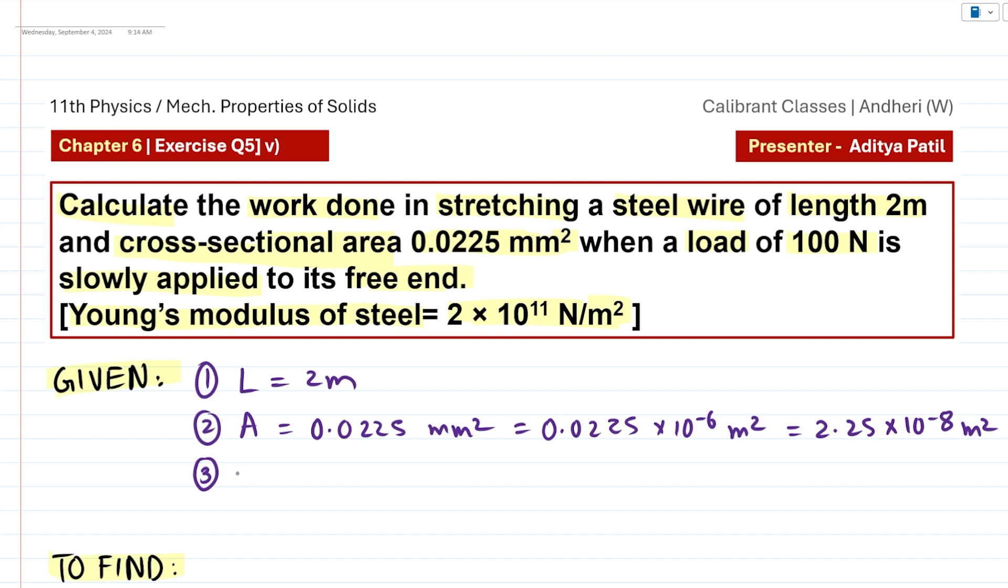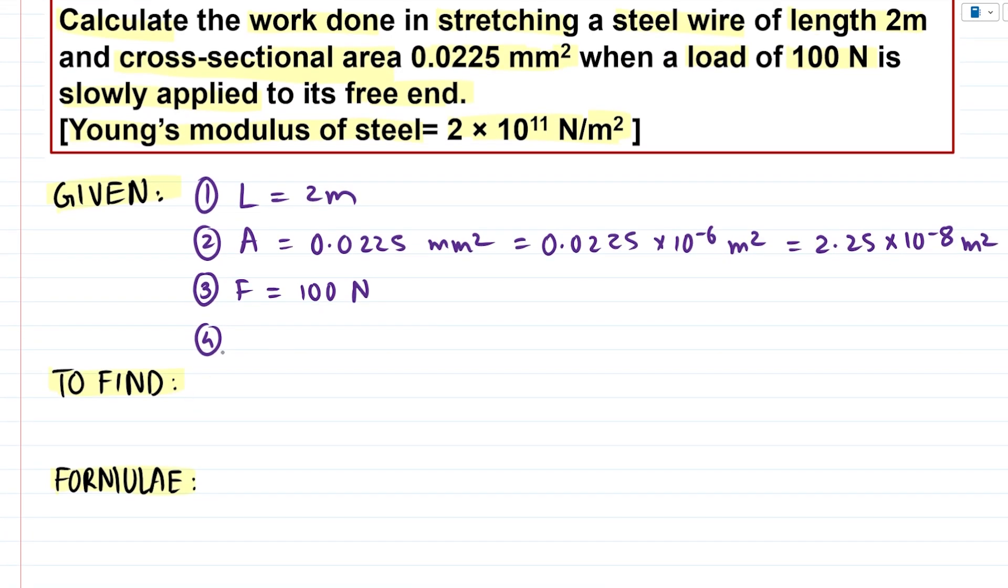After this we have given the value for the load or the force experienced by the wire. So that is F = 100 N. And then we have the Young's modulus for the material steel which is said to be 2 × 10¹¹ N/m². Pretty standard.